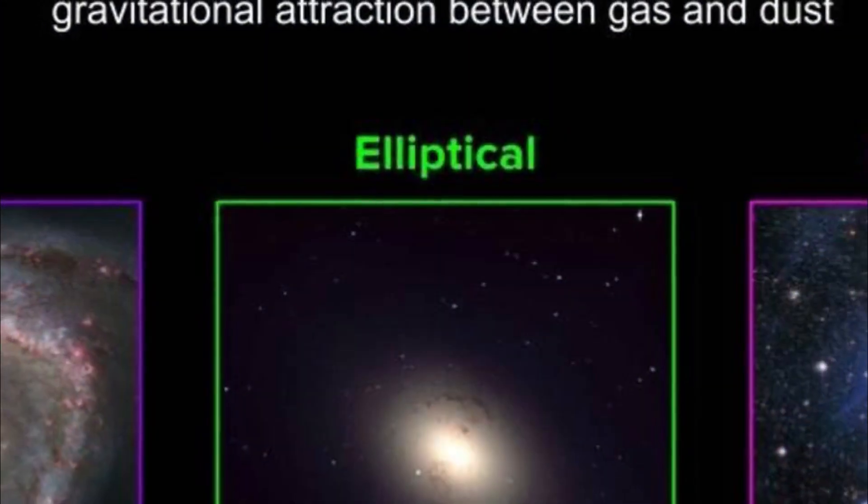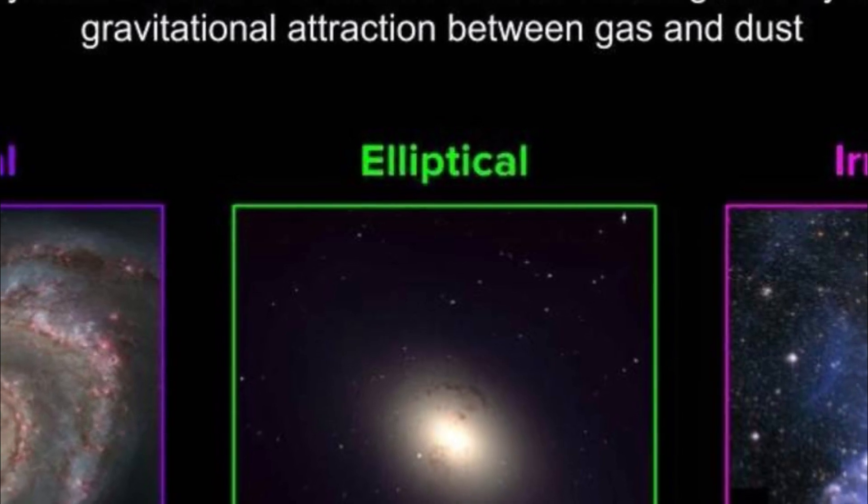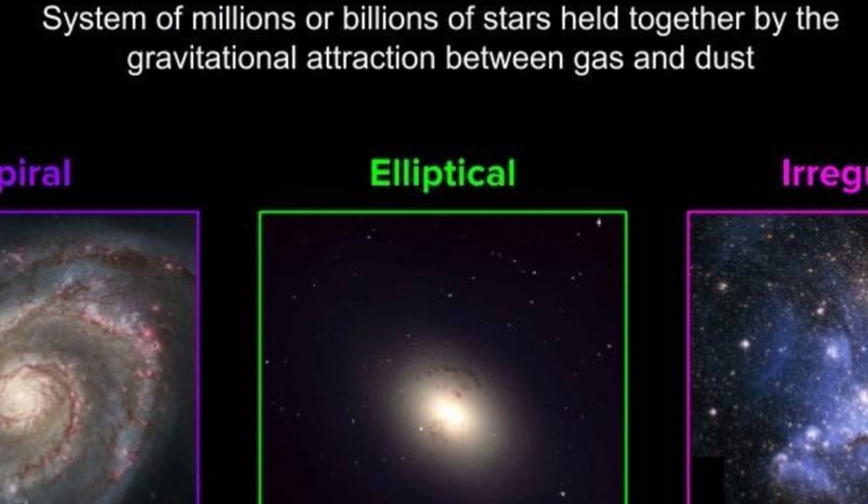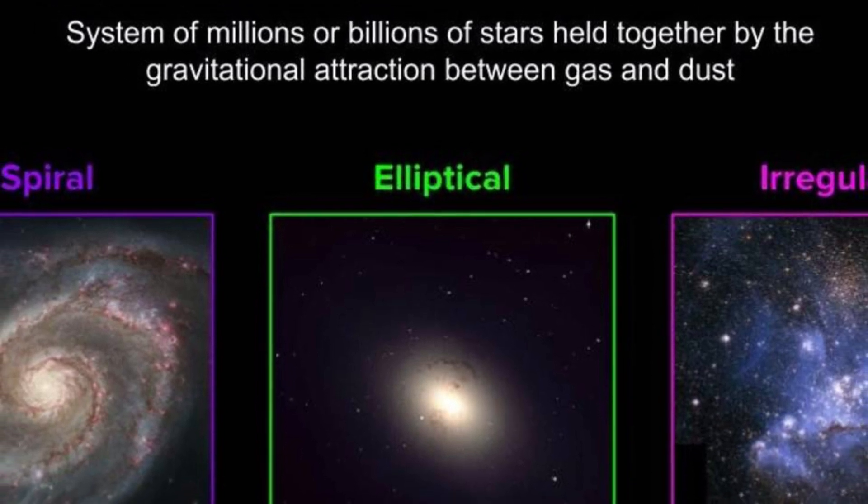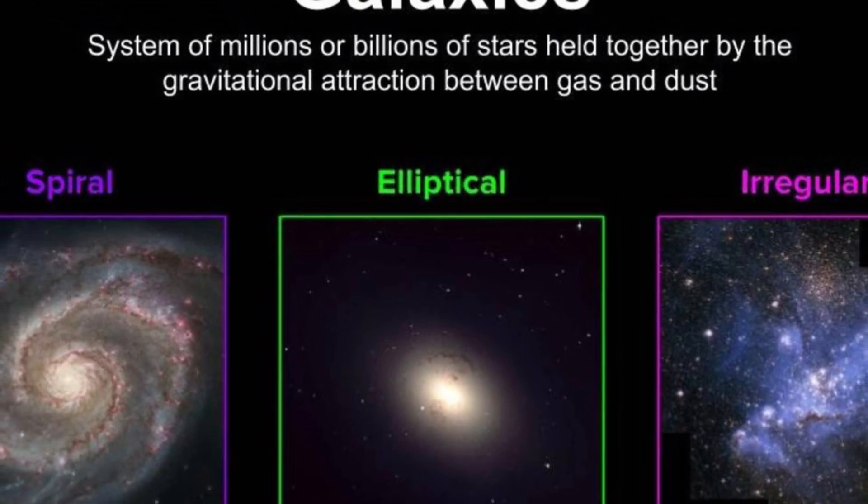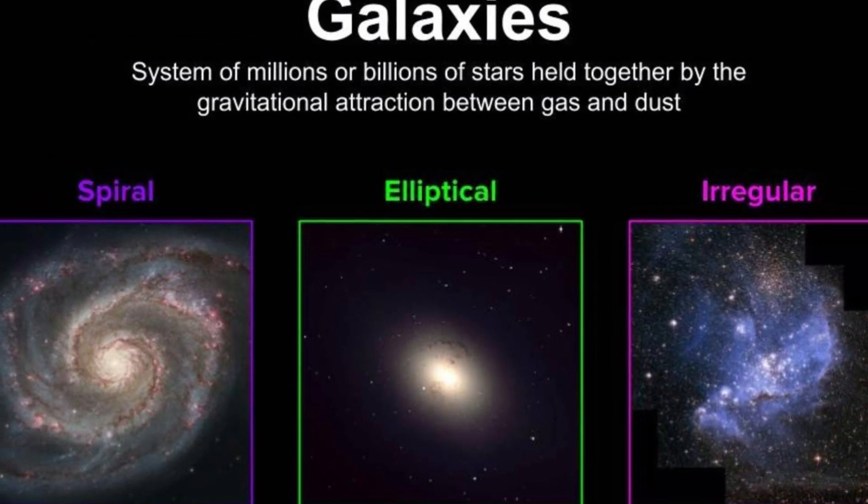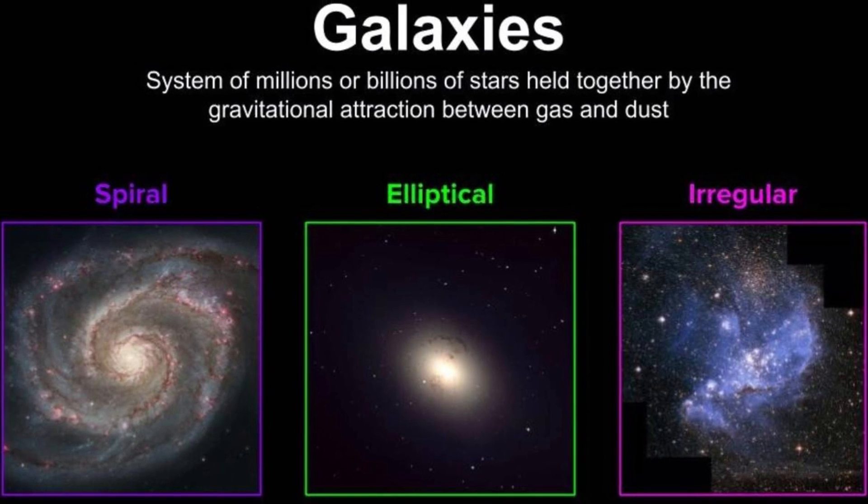As astronomers learned more about galaxies, they classified them into shapes. In 1926, Edwin Hubble published the Hubble sequence, a way of classifying galaxies. It divides galaxies into three classes: ellipticals, lenticulars, and spirals.